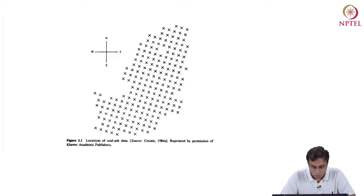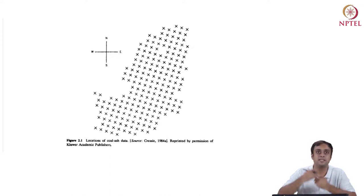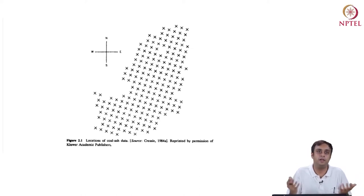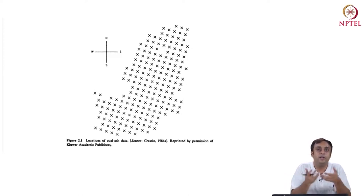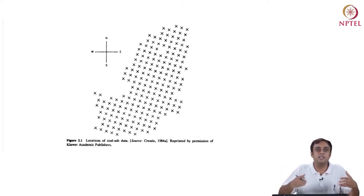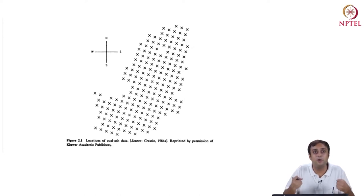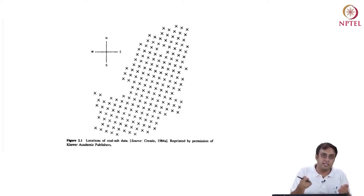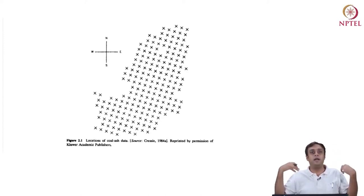Cressy takes his example of coal ash data. We are looking at locations where we have samples of coal ash volume. Coal ash is a type of impurity in coal. When one wants to mine coal from beneath the ground, you don't really know how much coal can be found just beneath where you are standing, or what is the quantity and quality of coal in an area. You have to be able to estimate these quantity and quality characteristics of coal beneath the ground before investing in mining.